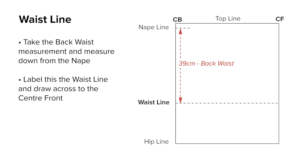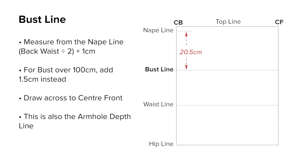The bust line. Measure down from the nape the half back waist measurement plus 1 centimeter. For bust over 100 centimeters, add 1.5 centimeters instead. Label bust line and square across to center front. The bust line is also the armhole depth.